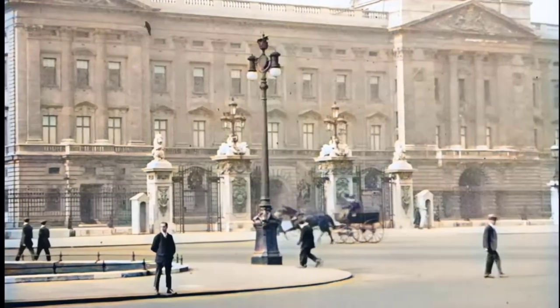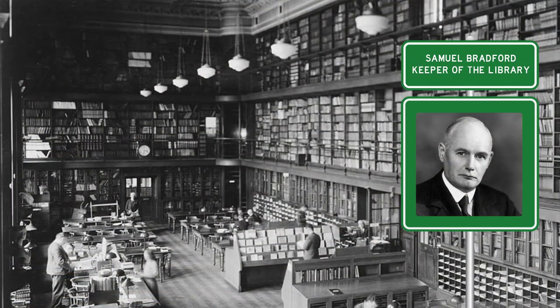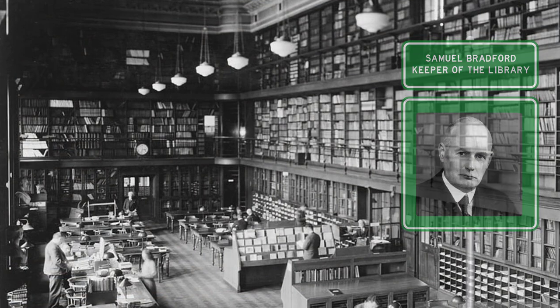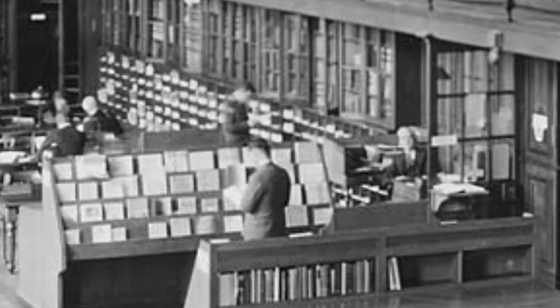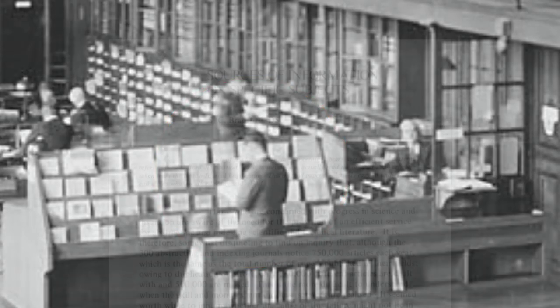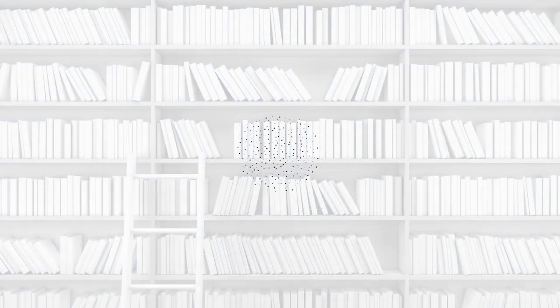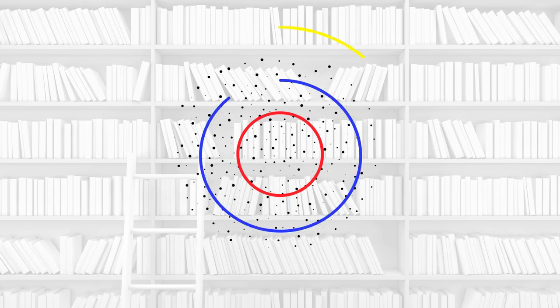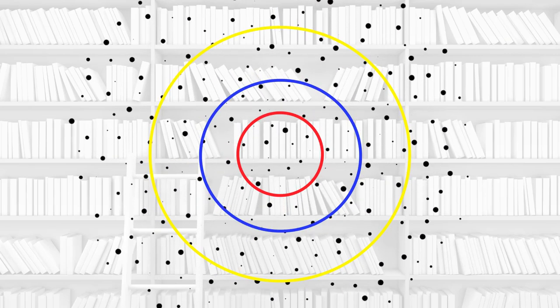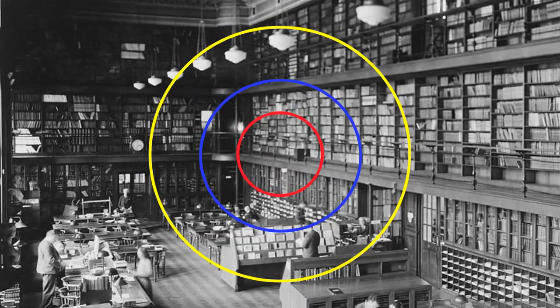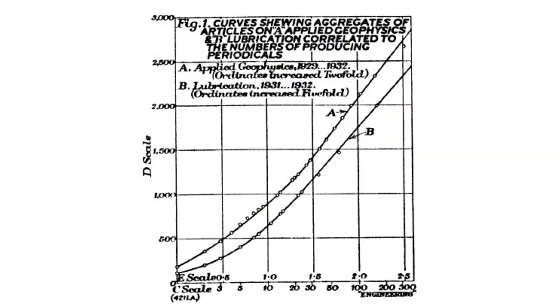In 1990s London, at the Museum of Science, the former chemist Samuel Clement Bradford was the keeper of the library. He was passionate about providing access to the burgeoning scientific literatures of the day. Bradford noticed that sources of information on any subject could be found in a nucleus of dedicated journals associated with a field, but relevant articles were also scattered across publications associated with other fields. This became known as Bradford's Law of Scattering.